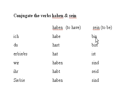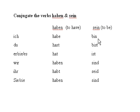Sein means 'to be.' In English the conjugations are: I am, you are, he is, we are, you all are, and they are — so there are not so many variations. However, in German these go: ich bin — I am; du bist — you are; er ist — he is; wir sind — we are; ihr seid — you all are; and sie sind — you are, polite, or they are.